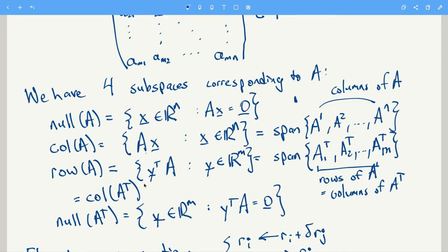And you can do the same thing but with the rows. So you have the row space of A looks like Y transpose A, where Y is in RM. In other words, the row space is just the span of the rows of A.